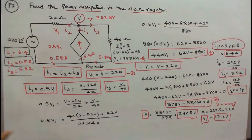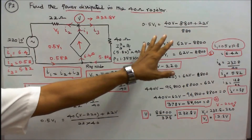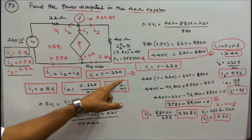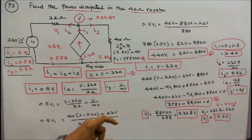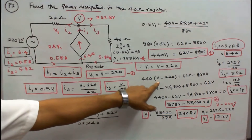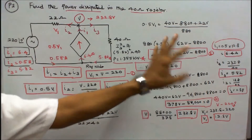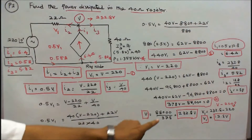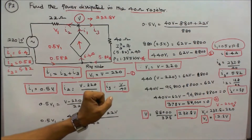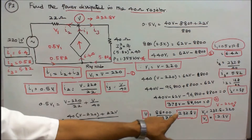Simplifying the equation gives 440 V1 equals 62V minus 8800. Knowing that V1 equals V minus 220, substituting into the equation gives 440 times (V minus 220) equals 62V minus 8800. Simplifying further gives 378V minus 88000 equals 0, therefore V equals 88000 divided by 378, which equals 232.8 volts.